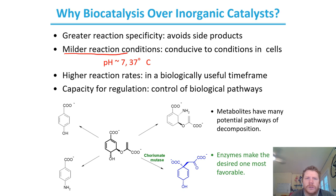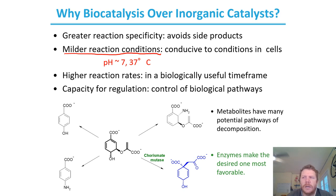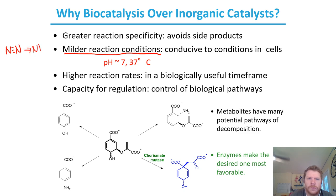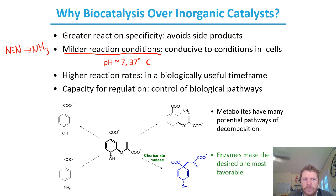Another benefit of using an enzyme is much milder reaction conditions. As an example: nitrogen fixation in an industrial process uses the Haber-Bosch process, which involves heating to around 900 degrees at extremely high pressure to convert N₂ to NH₃ — those extreme conditions are needed to break the triple bond. In contrast, there are microorganisms that can catalyze this same reaction essentially at room temperature.